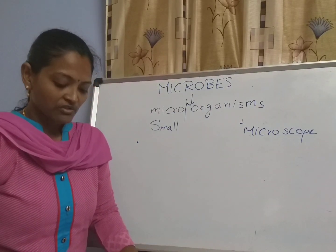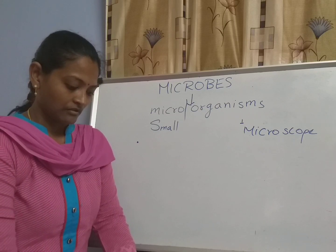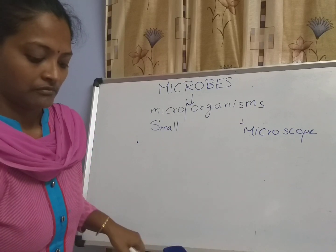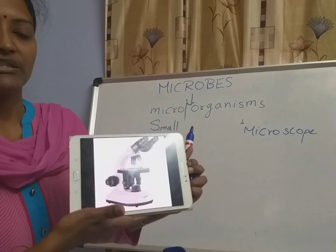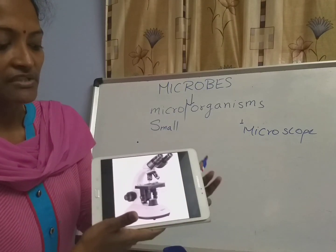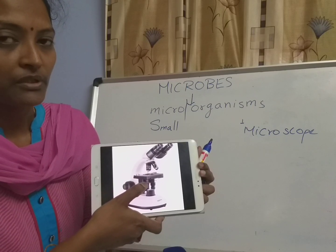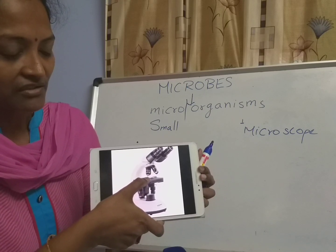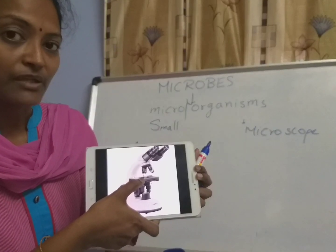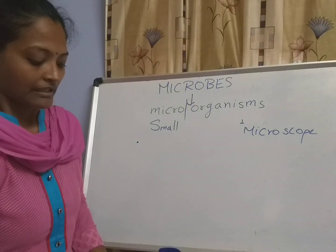I will show a picture of the microscope. See children, this is the microscope picture — this is the shape of the microscope. With the help of the microscope, we place a sample — any drop, a water drop. If you place a water drop here, you can see how many microbes are there, with the help of this microscope.